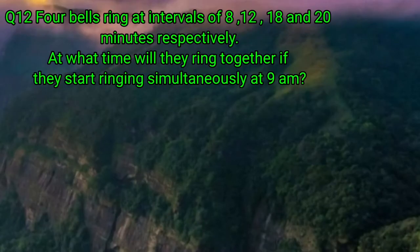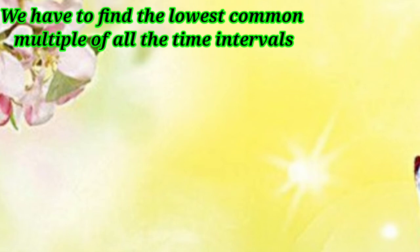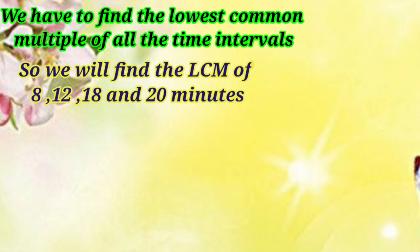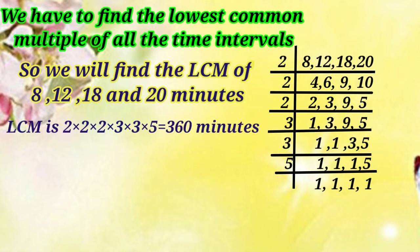4 bells ring at intervals of 8, 12, 18 and 20 minutes respectively. At what time will they ring together if they start ringing simultaneously at 9 am? Here these bells are ringing at different time intervals. We have to find the lowest common multiple of all these time intervals because at that time only they will ring together again. So we find the LCM of 8, 12, 18 and 20, which is 2 × 2 × 2 × 3 × 3 × 5 = 360.